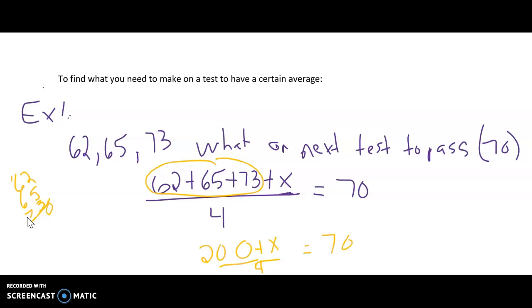And then what I'm going to do is multiply both sides by 4, and I'm going to have 200 plus x equals 280. And then I'm going to subtract 200 from both sides. And x equals 80.